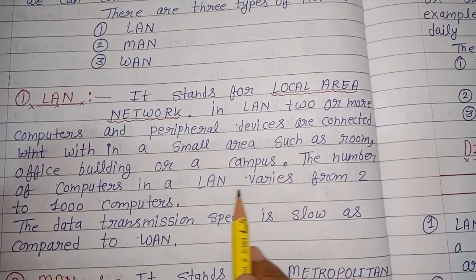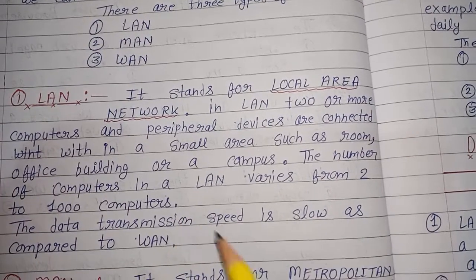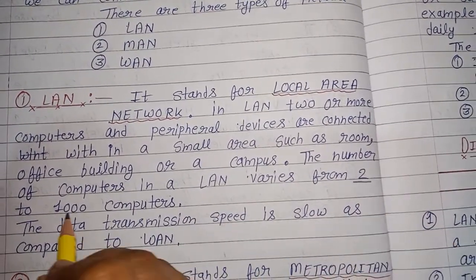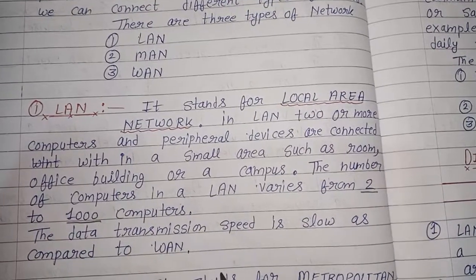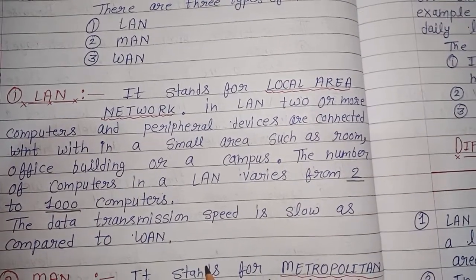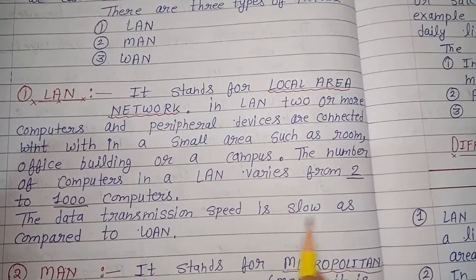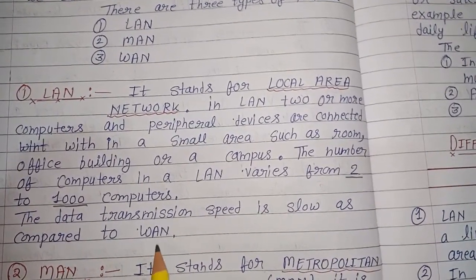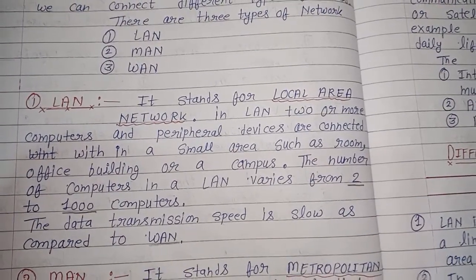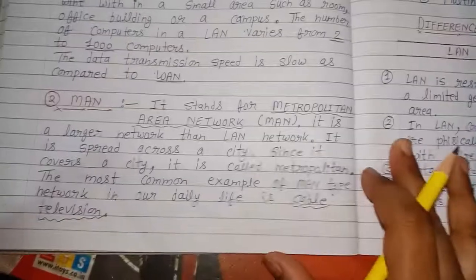The number of computers in a LAN varies from 2 to 1000 computers. Means, इनकी limit क्या होती है? आप two computer से लेके 1000 computer को एक दूसरे से attach कर सकते हो. The data transmission speed in LAN is slow as compared to WAN.